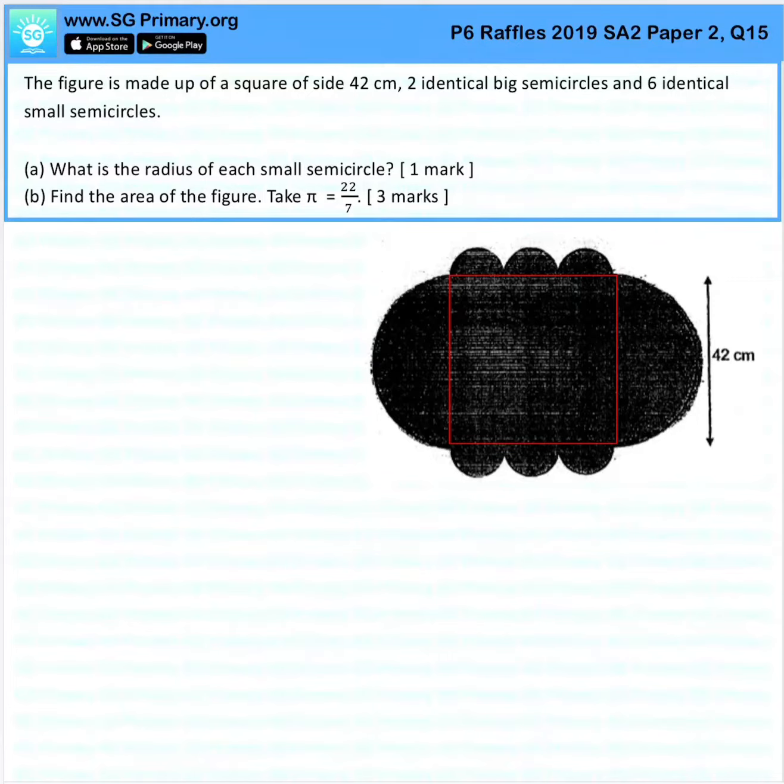Question 15. The figure is made up of a square of side 42 cm, 2 identical big semicircles and 6 identical small semicircles.